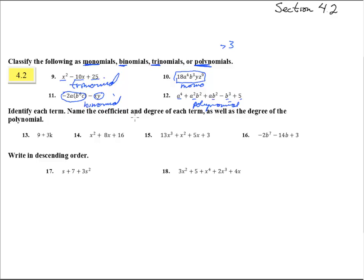Identify each term, name the coefficient and degree of each term, as well as the degree of the polynomial. Here's a term 9 and here's a term 3k. This has the coefficient 9, and this one has the coefficient 3. This one has degree equals 1 and this one has degree equals 0. We pick the biggest one of these terms, so the degree of the whole polynomial equals 1.